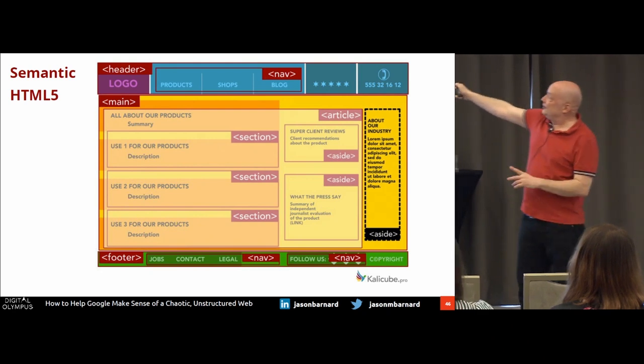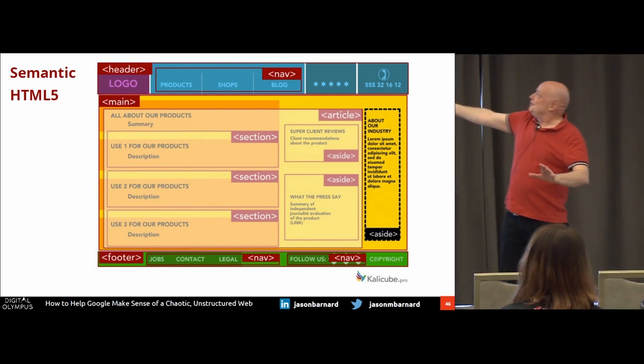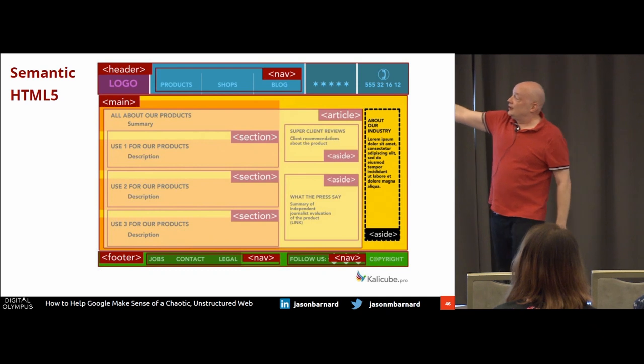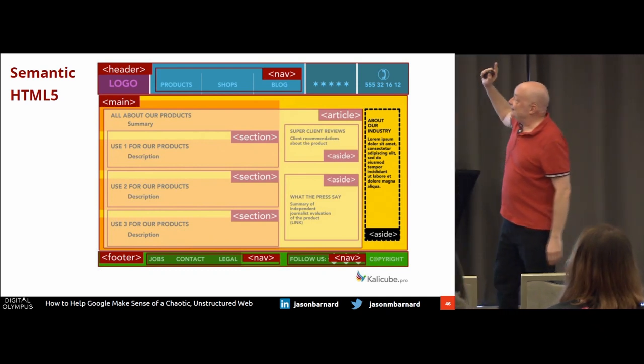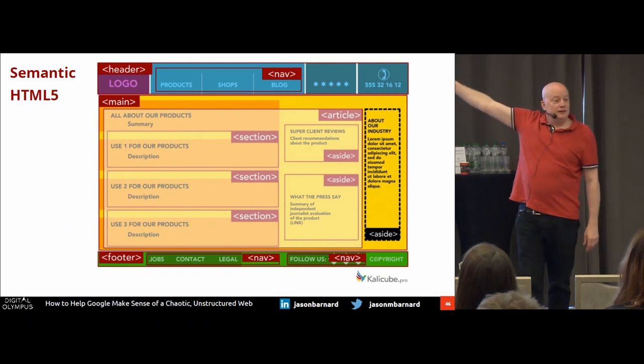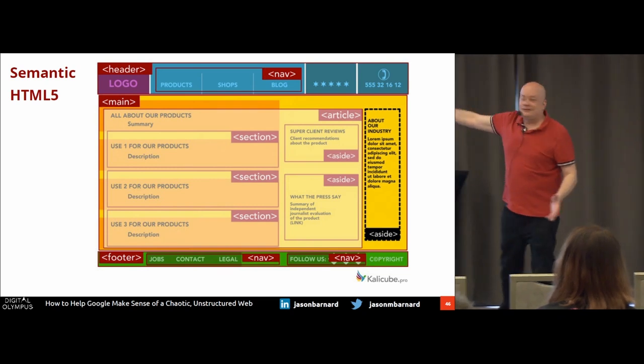I wrote an article on this topic. One very important thing here: the orange squares do not correspond to the semantic HTML5 — that's because the orange squares are design, and this is semantic, giving a role to each piece of content. So every time you look at your page and the design and the semantic HTML5 are the same, you've probably got it wrong — because it is very rare that design and the semantic role a piece of content plays are the same.